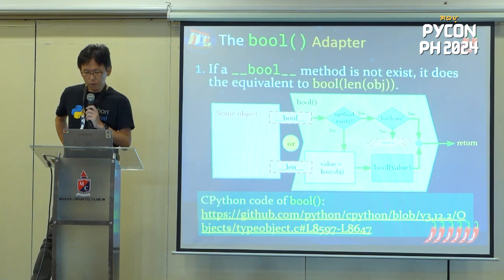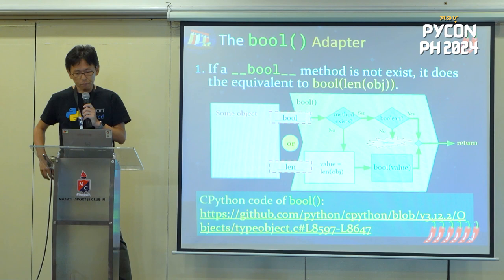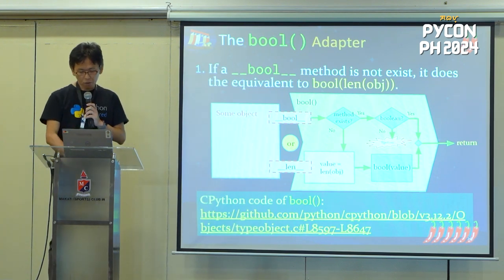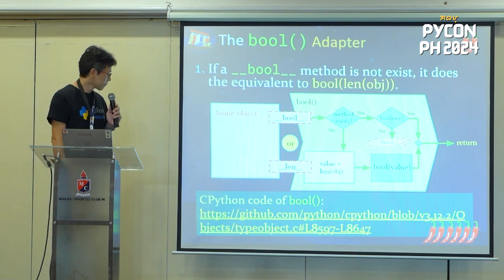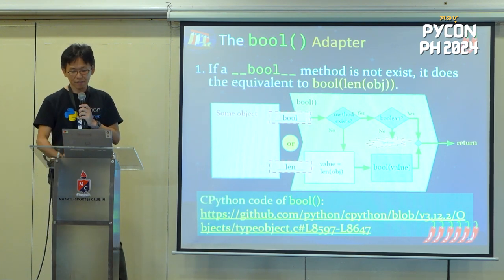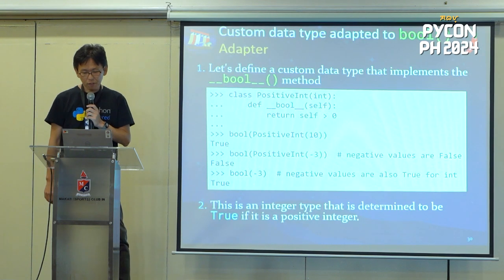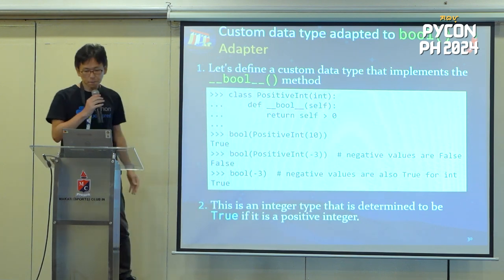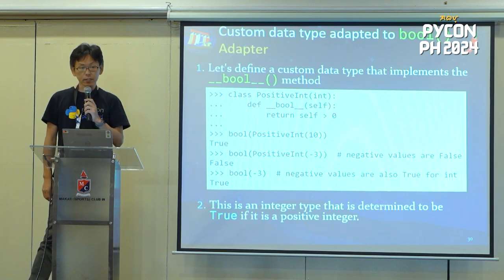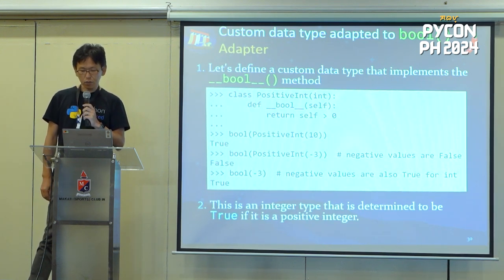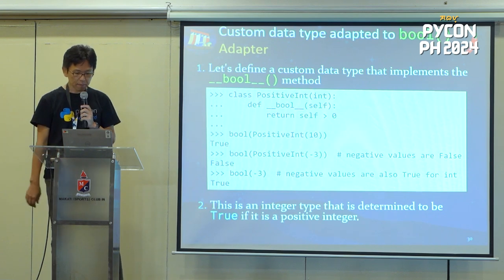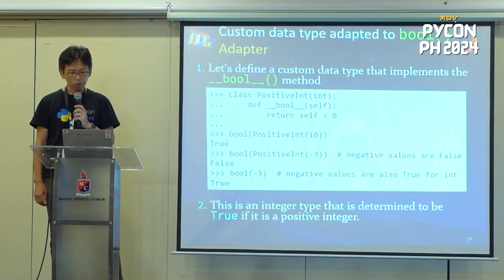This is the job of the bool adapter. I looked up the implementation code of the bool adapter in CPython for verification — this link is it. If you are interested, please check and read it. This is level six spicy, I think. Next, let's try using the bool adapter with a custom data type. I'm implementing a PositiveInt class — a positive int class. It's true for a positive integer. It inherits int and implements a `__bool__` method that returns true if self is greater than zero. In practice, the number 10 returns true and -3 returns false.